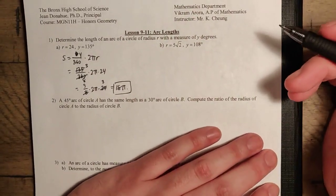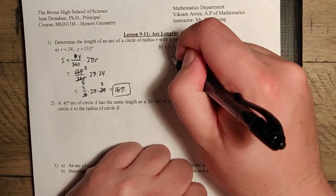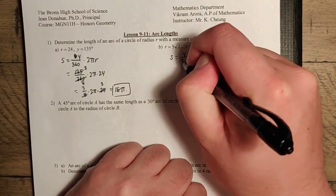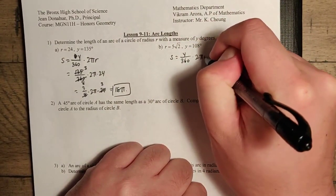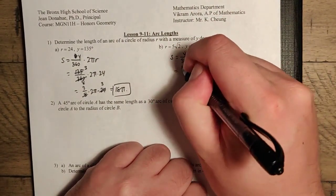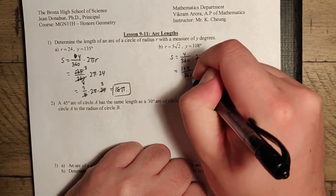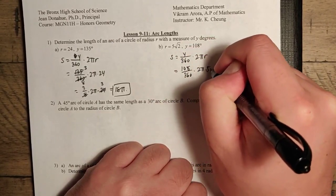And part b, it's much the same way. It's just slightly different numbers here. You can see we do the same thing. s is equal to y over 360 times 2 pi r. We can just substitute the numbers. It's going to be 108 over 360 times 2 pi times 5 radical 2.